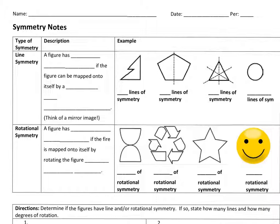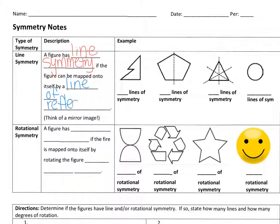First we're going to talk about line symmetry. A figure has line symmetry if the figure can be mapped onto itself by a line of reflection. It's like folding your paper right down the center of the figure — does it look the same on one side as the other? A line of symmetry splits it in half, and all the vertices would match up.